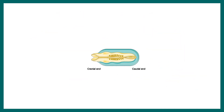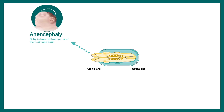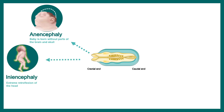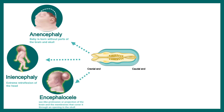If the cranial end of the neural tube fails to close, there are many defects like anencephaly, where the baby is born without a significant part of its brain. Then there is iniencephaly, which leads to an extreme retroflexion of the head. There are also defects known as encephalocele, where a sac-like protrusion is found in the back of the head.